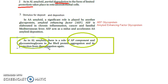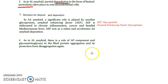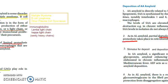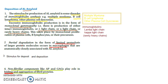That covers the pathogenesis. In the last video we saw the steps in general, and in this video we have seen the deposition of AL and AA amyloid specifically. There is a diagram which you can draw — let me show you.